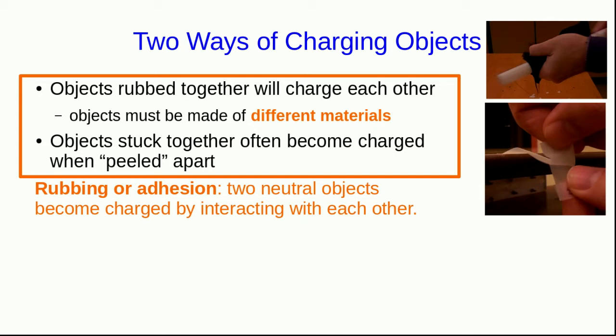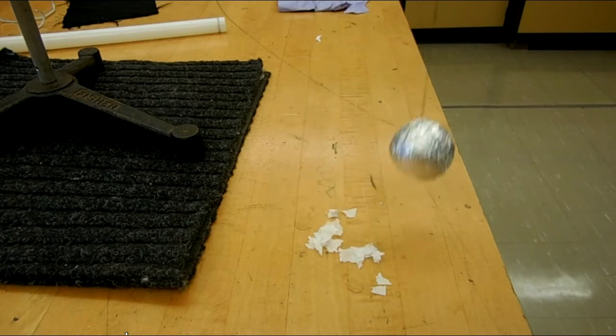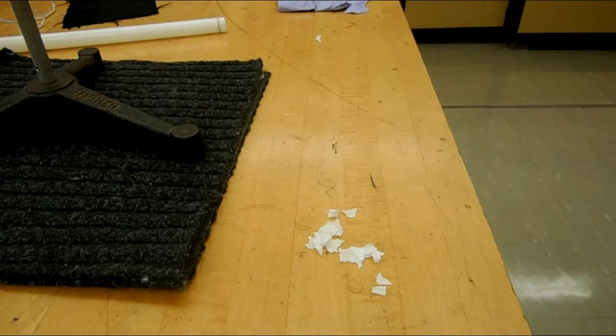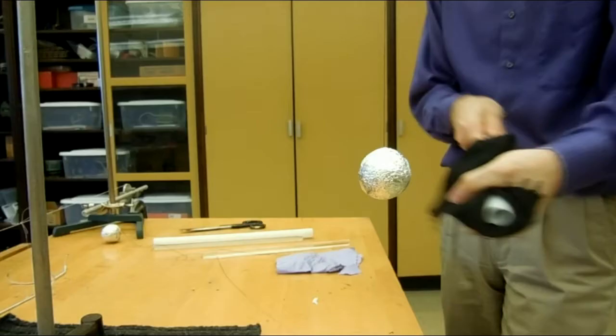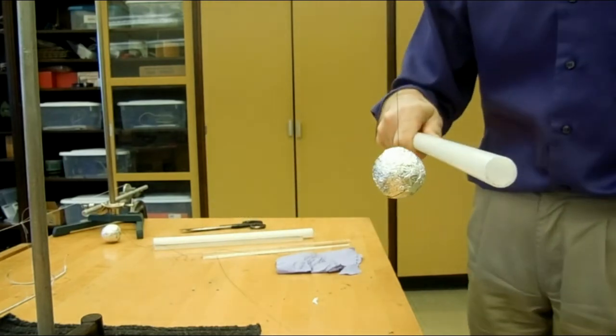But now let's see a totally different way to charge an object. Here is a ping pong ball covered in aluminum foil and all I'm doing is demonstrating that it has no effect on these pieces of paper so it's electrically neutral.